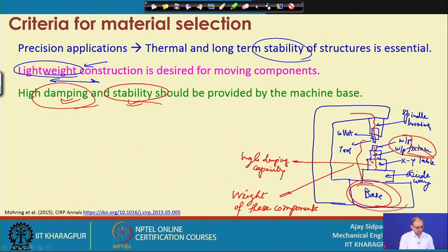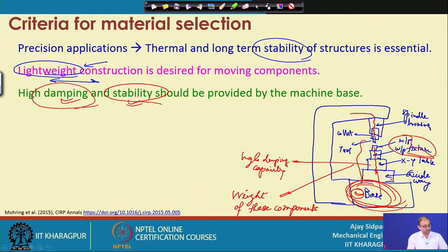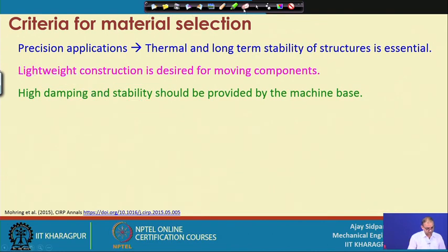The whole structure should not deform, because the base takes most of the load of the machine tool. If the base deforms or has dimensional problems, those defects will be replicated and reflected into the component being machined. You may not get the required dimensions and will end up with geometric errors, as we have seen in previous lectures.